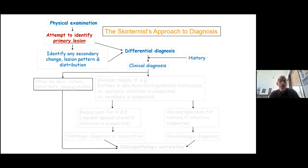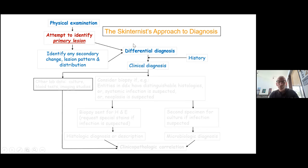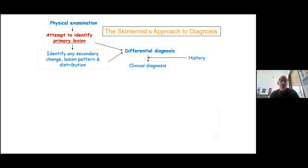This illustrates our whole diagram for how dermatologists think and how I'd like you to think as a skin turnist. We start in the upper left with physical exam — first identify the primary lesion, any secondary changes, lesion patterns, and distributions. Then you develop a differential diagnosis, insert some history to see what gets eliminated or supported, come to a clinical diagnosis, and the rest flows from there.